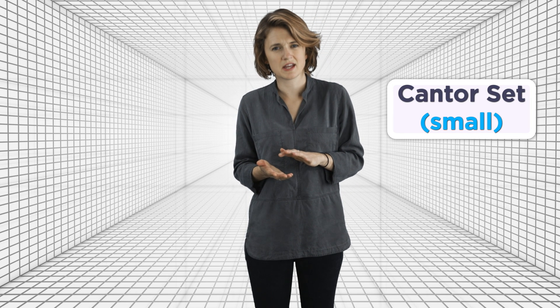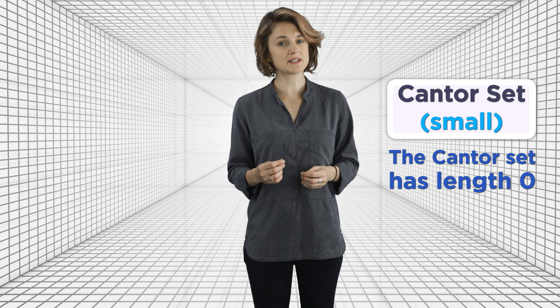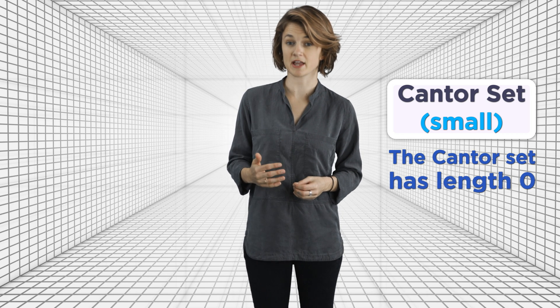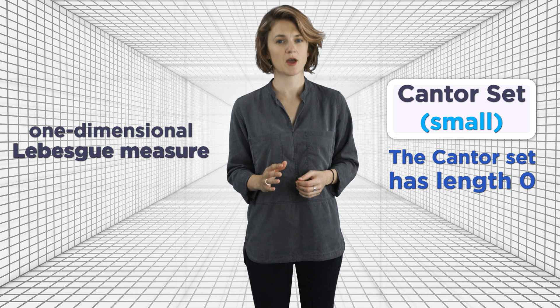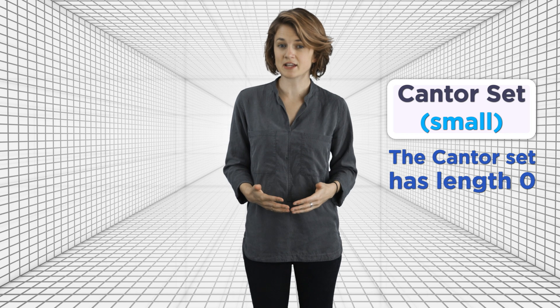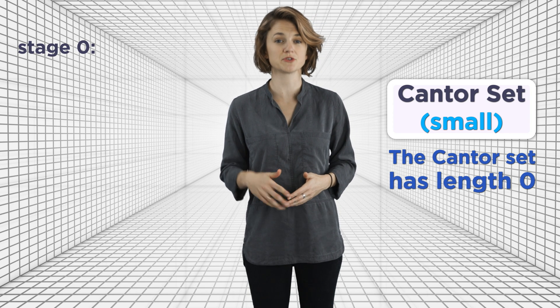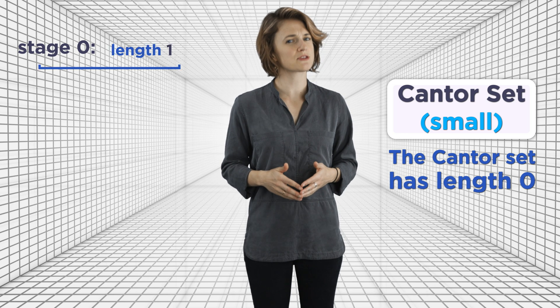But here's the sense in which the Cantor set is small. It has length zero. The mathematical formalization of your intuitive notion of length is called the one-dimensional Lebesgue measure. But right now, I'll just call it length. Let's look at the length of the Cantor set in stages. At stage zero, it's the interval zero to one. So it has length one.